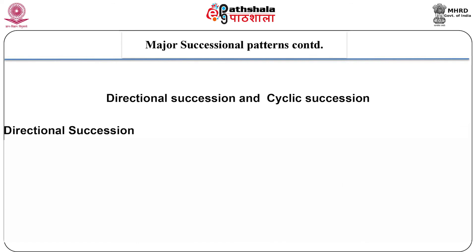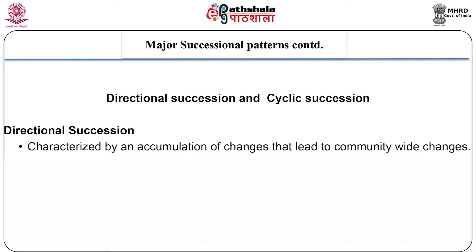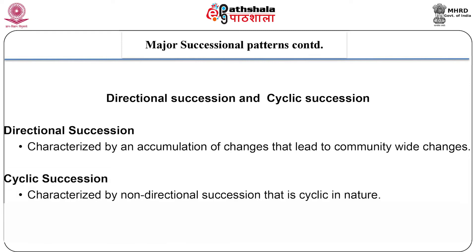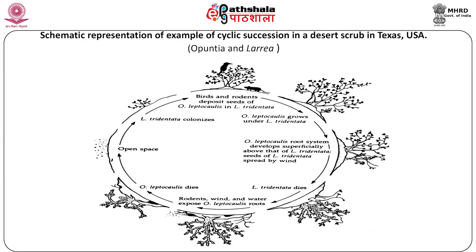Directional succession is characterized by an accumulation of changes that lead to community-wide changes. Cyclic succession is characterized by non-directional succession that is cyclic in nature and generally involves a type of local changes. This slide shows a schematic representation of an example of cyclic succession in a desert scrub in Texas, USA.